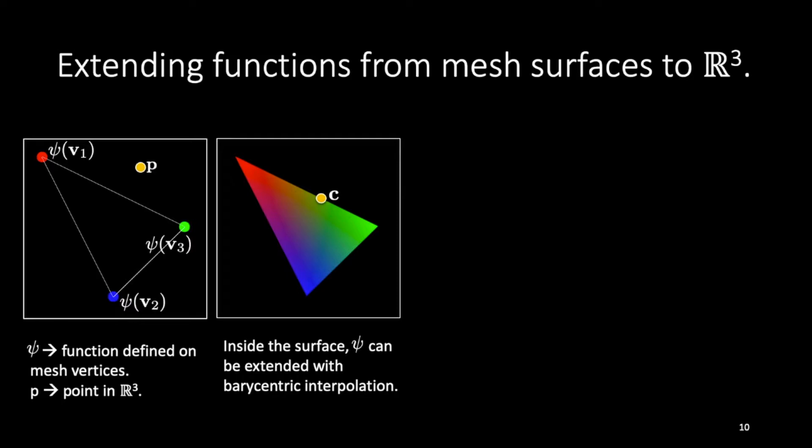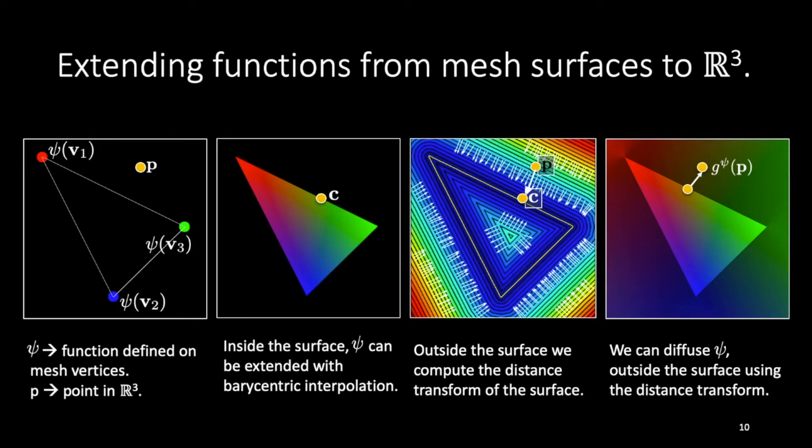To evaluate ψ outside, we leverage the distance transform of the surface to diffuse ψ using the closest surface point.